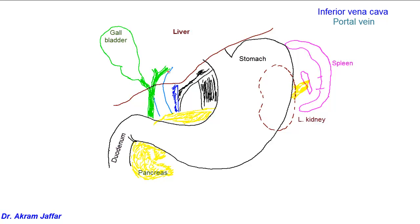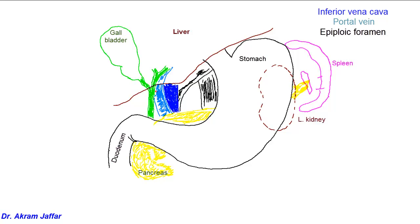The portal vein is a big vein that is formed behind the neck of the pancreas, and then it passes through the free border of the lesser omentum in front of the inferior vena cava. This is the remaining part of the inferior vena cava. In between them, there is an opening — the epiploic foramen. The portal vein provides the main blood supply of the liver, but not the oxygenated supply, because the oxygenated supply comes from the hepatic artery, which we are going to describe in a moment.